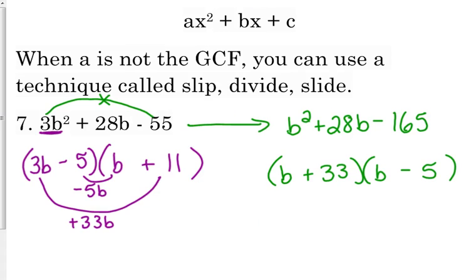Okay, so that's the slip part. Then you factor. Now you divide. You divide by that original leading coefficient. So the original coefficient was 3. I'm going to divide. If it divides evenly, I go ahead and divide it out. 33 divided by 3 is 11. If it does not divide evenly, like 5 over 3, if it reduces, you reduce it, and then you slide that number on the bottom to the front of that factor. And we got the exact same answer.